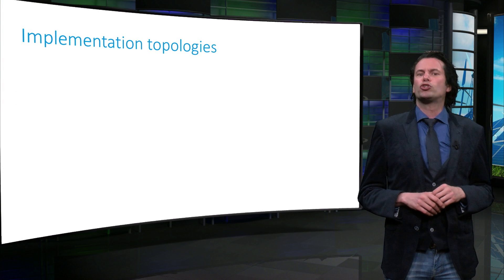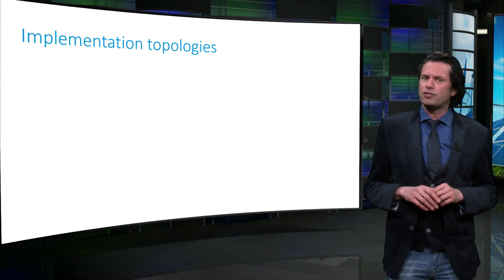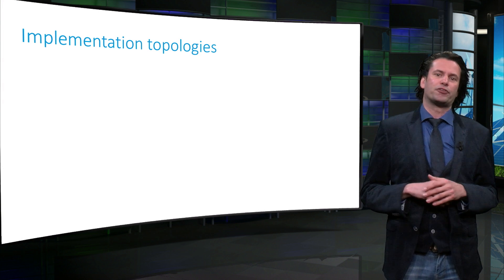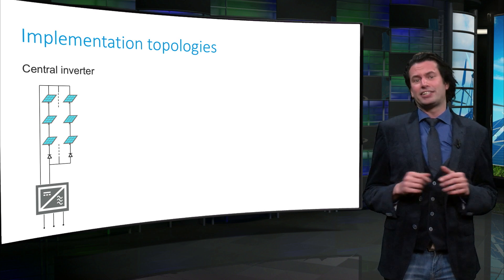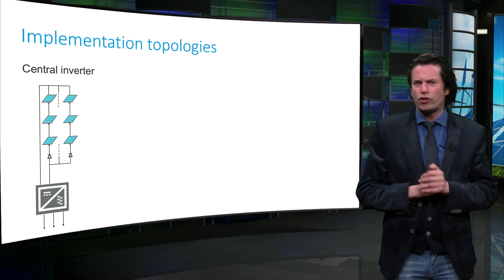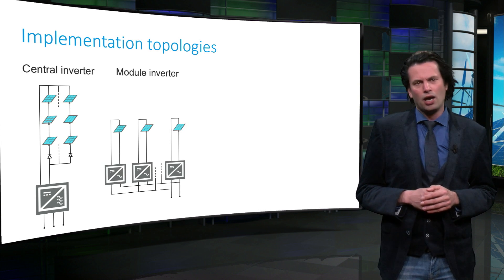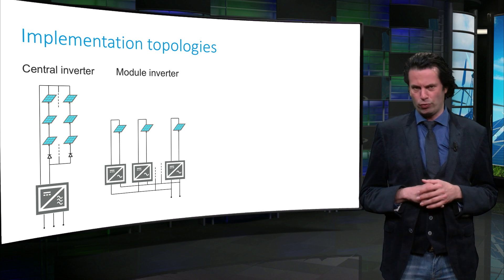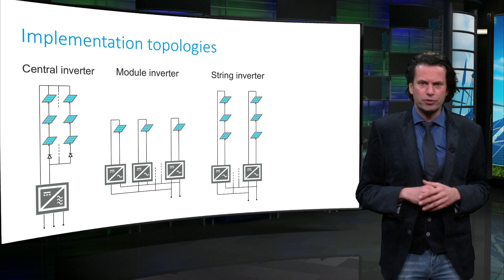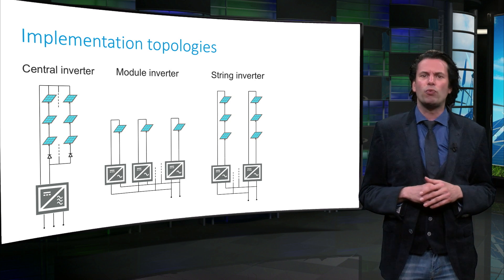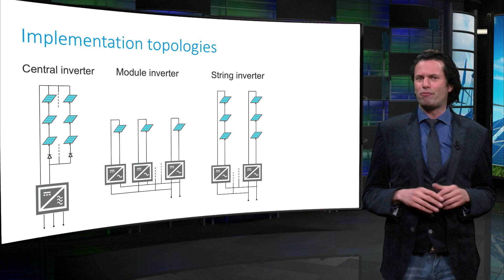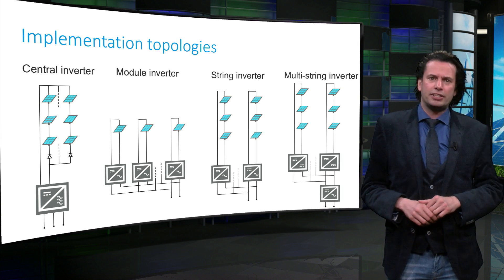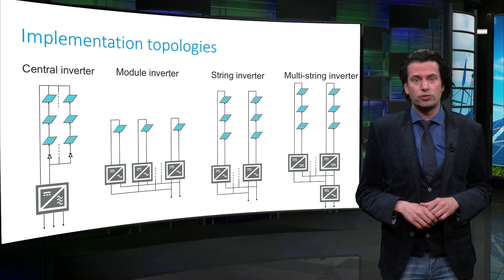Apart from the modes of operation, inverters are also classified on the basis of implementation topology. There are four different categories under this classification. We have central inverters, which are usually in the several kilowatt to 100 megawatt range; module inverters or microinverters, typically rated around 50 to 500 watts; string inverters, typically rated around 500 watts to a few kilowatts — a string being a number of PV modules connected in series; and finally, multi-string inverters, typically rated around 1 kilowatt to 10 kilowatt range.